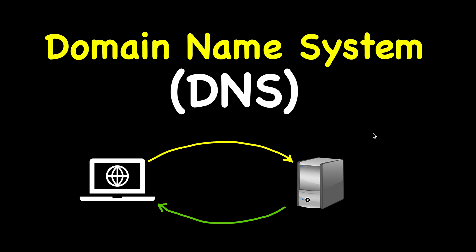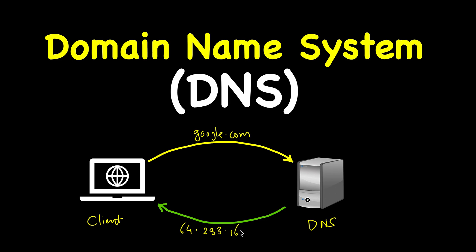In this video we will study about Domain Name System, or DNS. Here we have a client — typically our browser — where we type the name of a website like google.com, and then the DNS server returns an IP address corresponding to that name. For example, let's say 64.233.160.10.